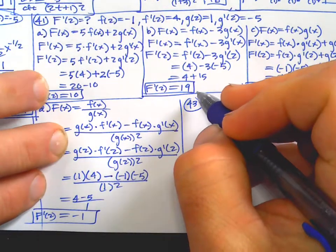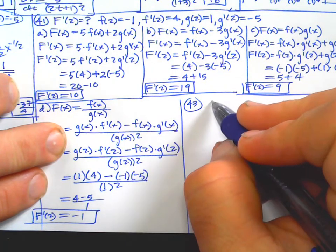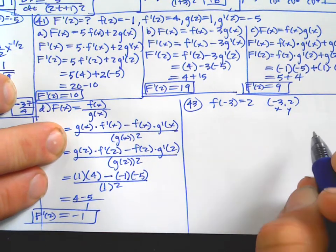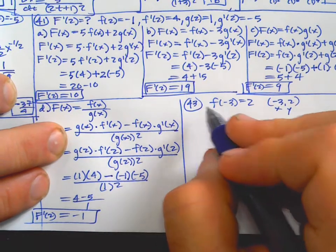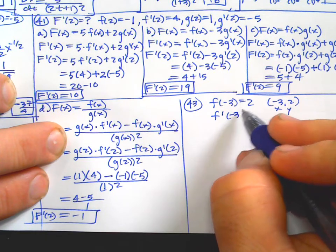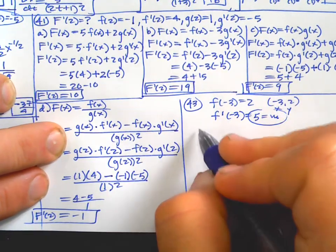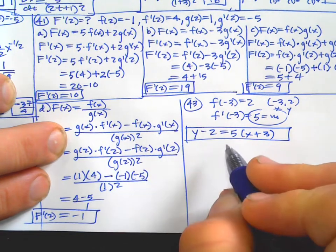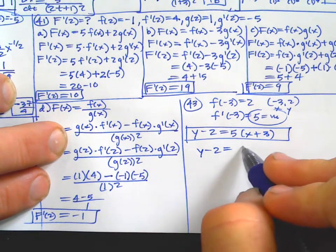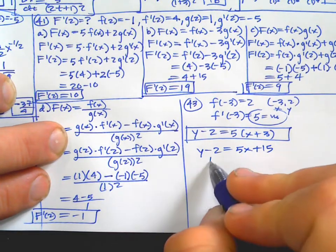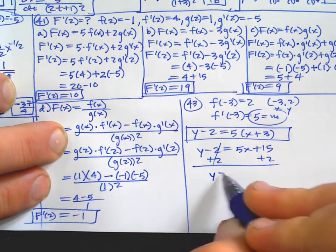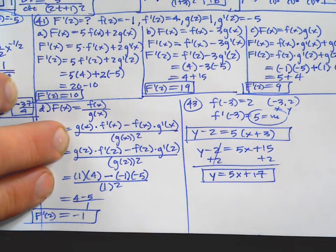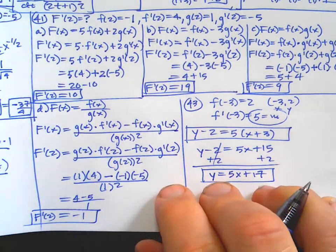Problem 43 says find the equation of the tangent line to the graph of y equals f(x) at x equals negative 3. They tell you f(negative 3) equals 2 — that's your point — and f prime(negative 3) equals 5 — that's your slope. So: y minus 2 equals 5 times (x plus 3). Leave it in point-slope form, or change to slope-intercept if needed for multiple choice.